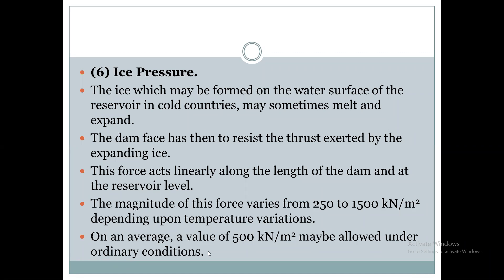On average, for ordinary conditions when the temperature is medium, the ice pressure value is considered as 500 kN per meter square. This falls within the range of 250 to 1500 kN/m². For ordinary temperature conditions, this force is considered as 500 kN per meter square.